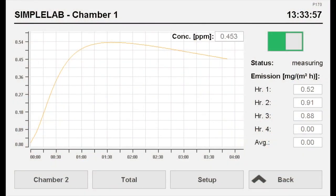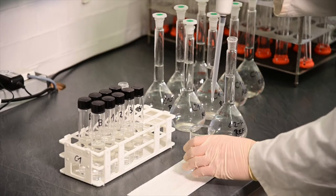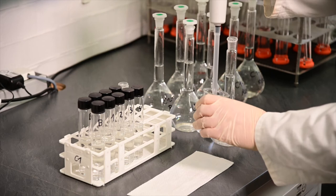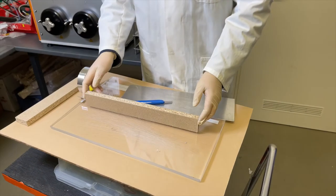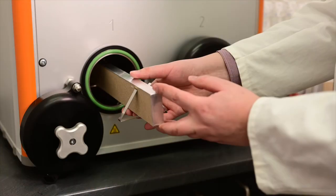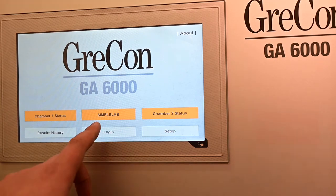This does not only eliminate the need for time-consuming wet chemical analyzers, but also the measurement results are no longer subject to influence of the individual operator. All the user has to do is to prepare the test samples, input them into the GA-6000 and start the measurement via the touch screen.